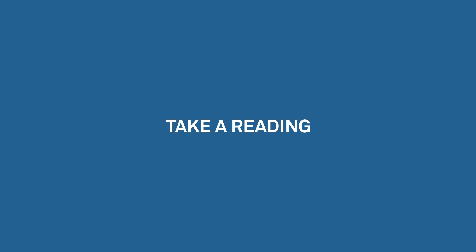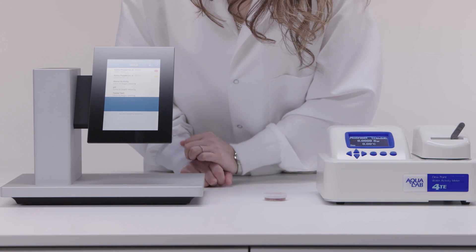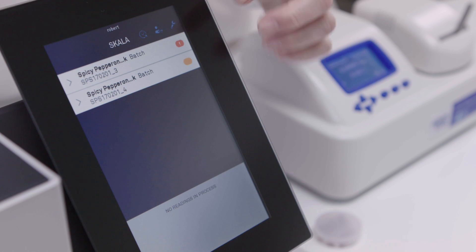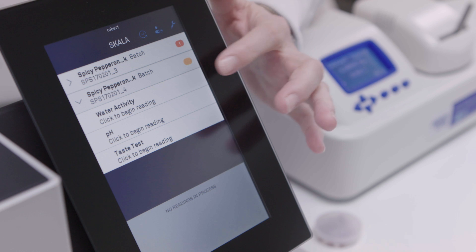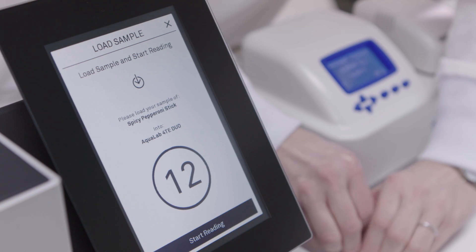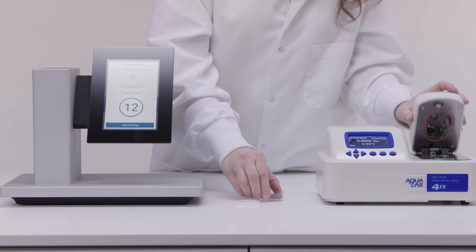Take the cup with your sample in it. We're going to designate the lot number for this sample in Scala, but you can do this manually also. Remove the lid if necessary and put the sample in the Aqualab. Close the top and slide the lever to read. Scala will listen for and record the reading, but you can also check the reading on the Aqualab screen.